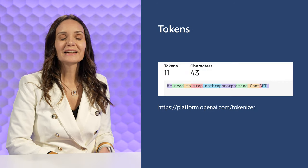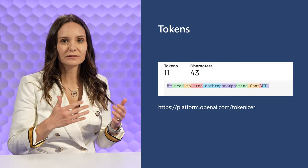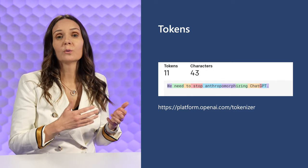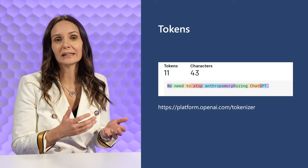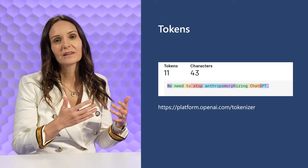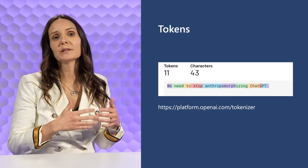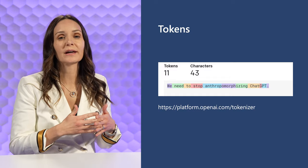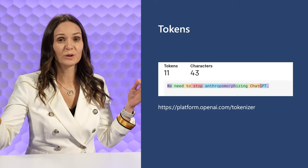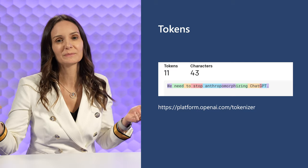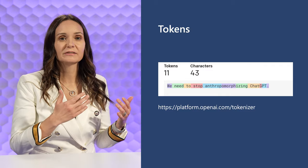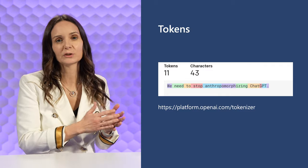In the case of OpenAI, a token is really a short sequence of letters. For example, a token can be a whole word like 'we' or 'need' because those words are short and very commonly used. But a token can also be a part of a word — for example, the word 'anthropomorphize' takes three tokens because it's a very long word that is not very commonly used.